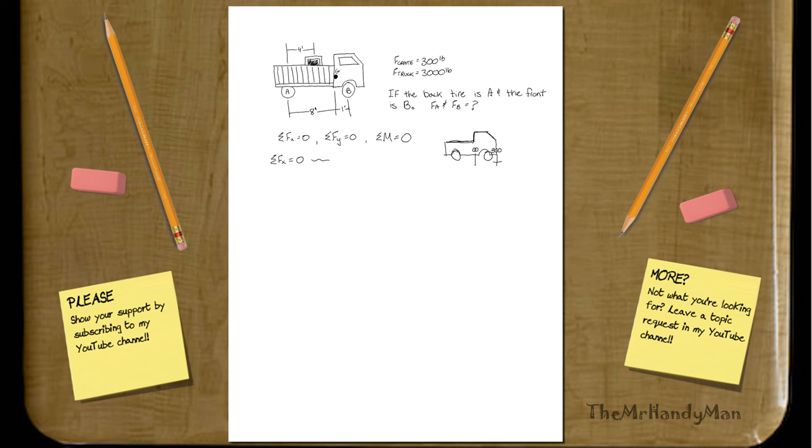And basically if you look at the back tire, that's labeled A, and the front tire labeled B. What's the forces at each of these tires?